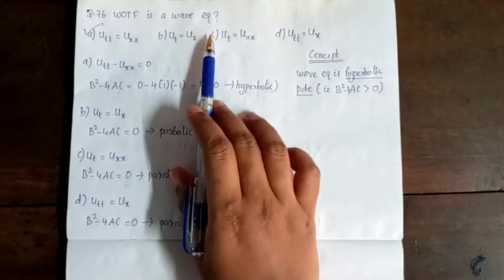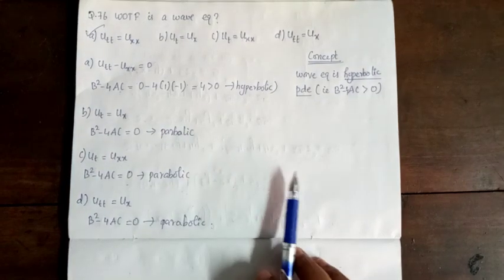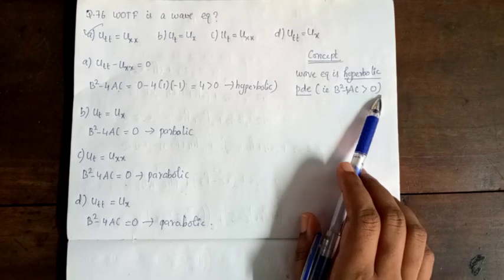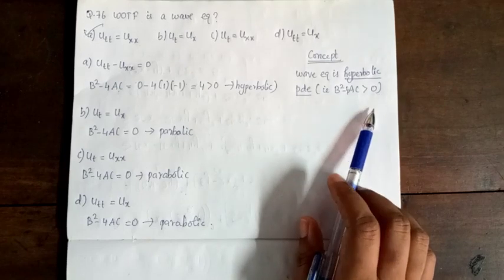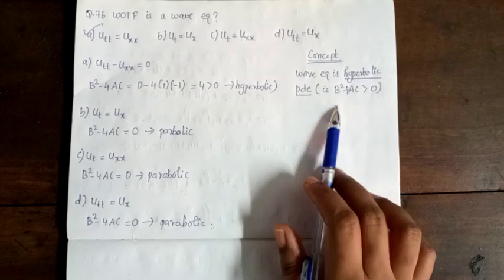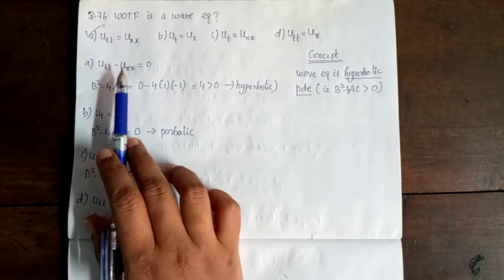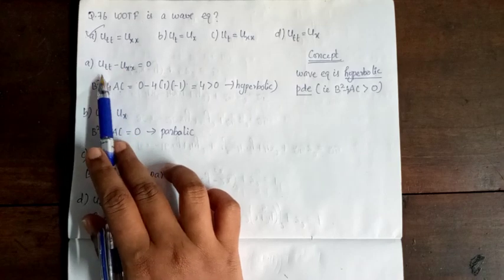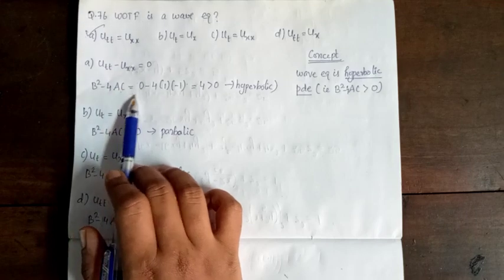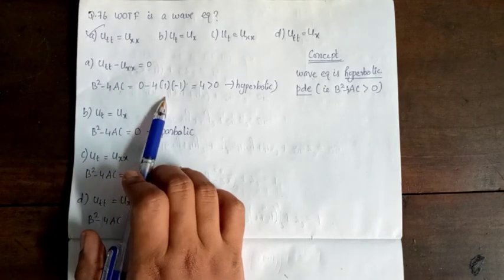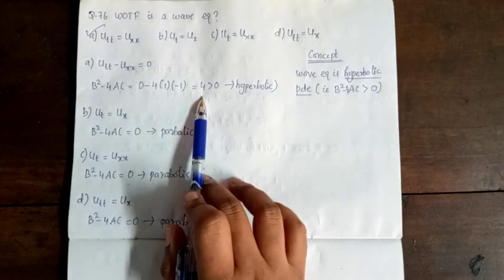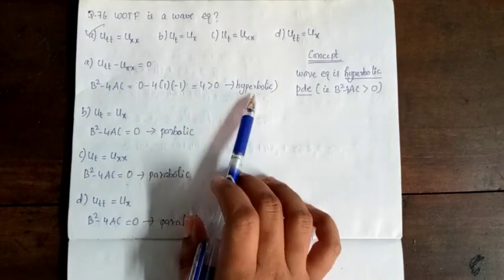Next question: Which of the following is a wave equation? A wave equation is a hyperbolic PDE, meaning b² − 4ac > 0. Checking utt − uxx = 0: here b = 0, a = 1, c = −1, so b² − 4ac = 0 − 4(1)(−1) = 4 > 0. So the first equation is a hyperbolic PDE.